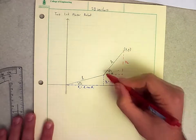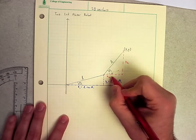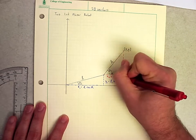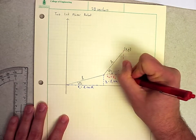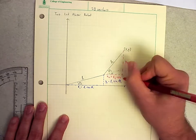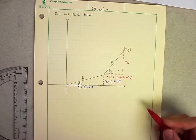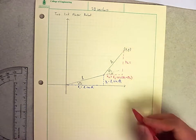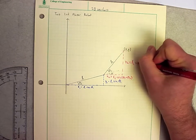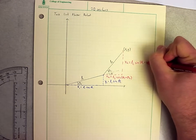So what that tells us, when we look at the red triangle, is that x2 must equal the hypotenuse of this triangle, which is L2, times the cosine of this angle. And this angle is the combination of theta1 plus theta2. Similarly, for y2, it's going to be the hypotenuse times the sine of this entire angle here, which again we just said was theta1 plus theta2.